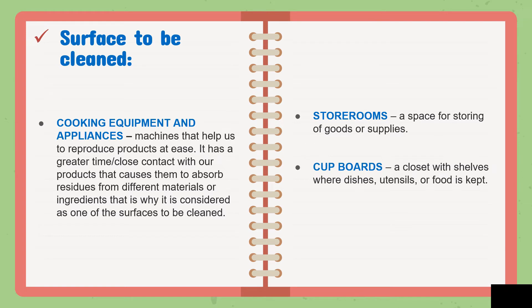The last is the cupboard — a closet with shelves where dishes, utensils, or food is kept. Just as we have storerooms, we also have cupboards. The cupboard is where we put our utensils, dishes, pots and pans, kaldero, and kawali. We make sure it is dry, clean, and sanitized. These are the kitchen premises we need to clean.